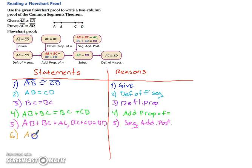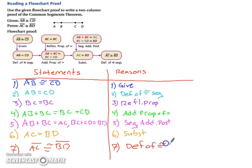So now if we use our substitution, we can get that AC equals BD. And once we have that, we can finish it up with the fact that if AC equals BD, then AC must be congruent to BD through the definition of congruent segments.